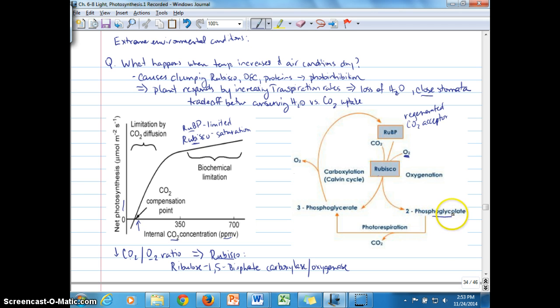2-phosphoglycolate molecule. And 2-phosphoglycolate is a toxic sort of product that will then have to be broken down through the process of photorespiration. So that's what we're going to continue to talk about here.